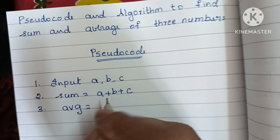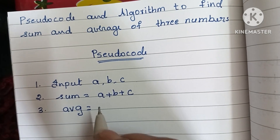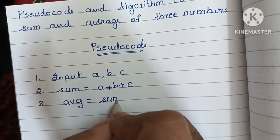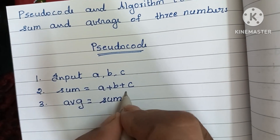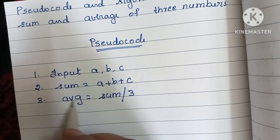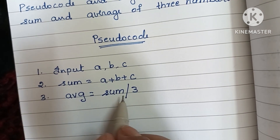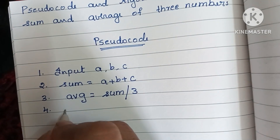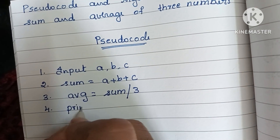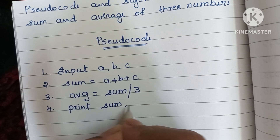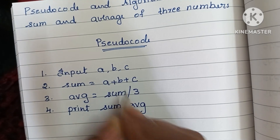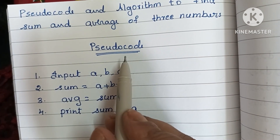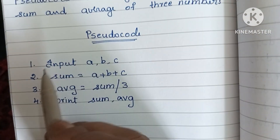Next, we have to calculate average. Here, avg represents average. To find the average, first we find the sum of three numbers, then avg is equal to sum divided by three. The fourth step is to print the output — sum and average. In this pseudocode we have to display sum and average of three numbers.